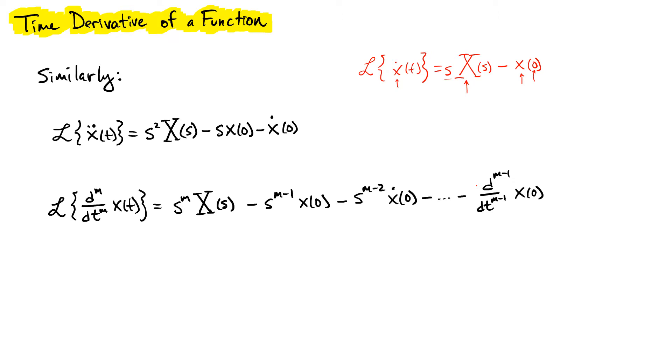If you were to extend that same derivation for a second order derivative, so x double dot, so two derivatives, what would happen in that derivation is that we would apply the integration by parts twice, similar to what we did in the sinusoidal case. What would then come out of that is that you would get yet another factor of s that pre-multiplies the Laplace transform of x.